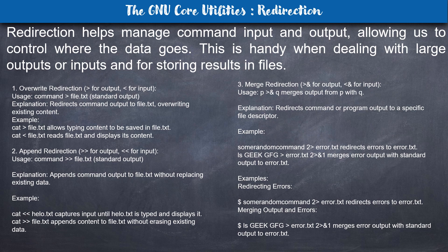The first is overwrite redirection, represented by the greater-than symbol `>`. Whatever output a command produces will be written to a file. So `cmd > file` redirects the command's standard output to a file, overwriting the existing content. For example, `cat > file` will allow you to type and save to a file.